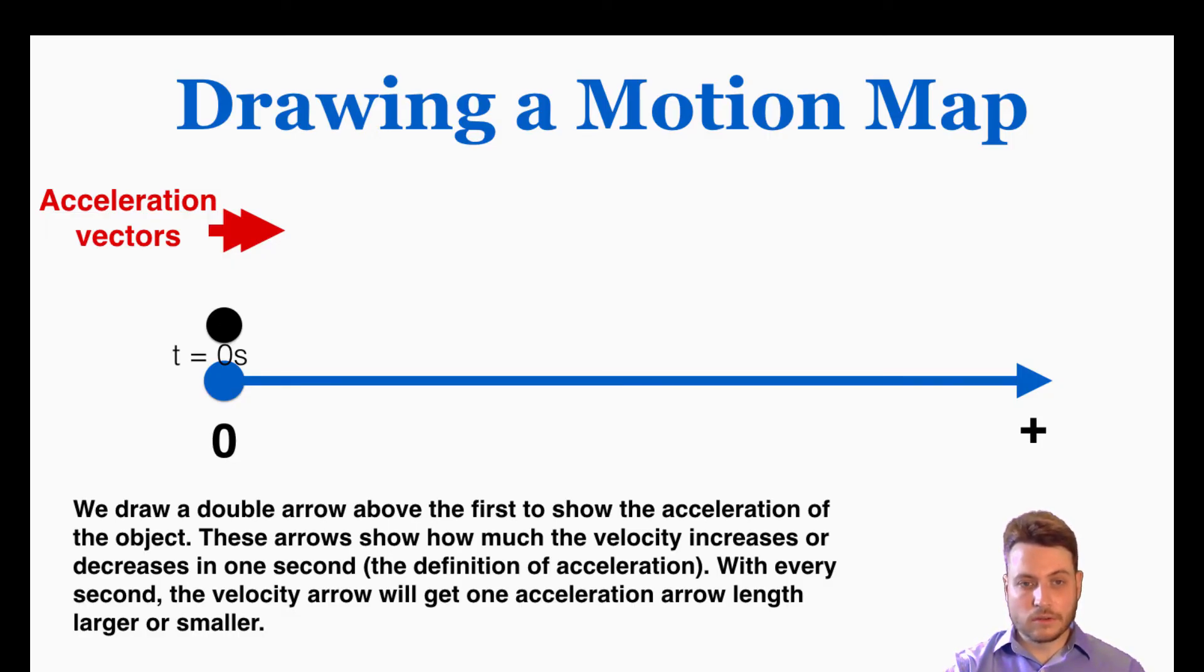the velocity is going to be the acceleration arrow plus zero because there's no velocity to start off here. So it's just the acceleration arrow's length. And then after two seconds, the velocity arrow is going to be the acceleration arrow bigger than it was before, like this. So the acceleration arrow is showing you how much the velocity arrow is growing over time.